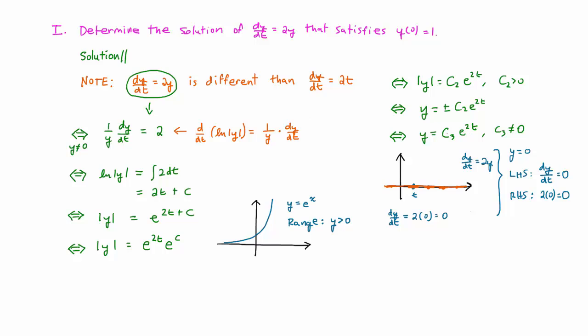Finally, we can say that even if the constant in front of our formula for y is zero, we'll end up with the solution y equals zero, so we can now let y equals c4 e to the 2t, where c4 represents any real number, including zero.